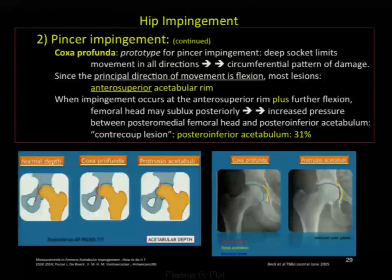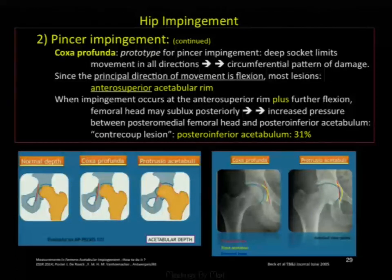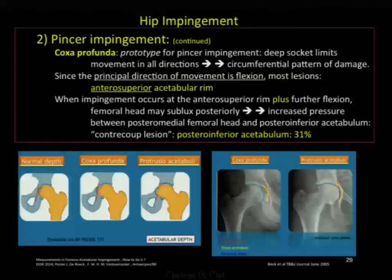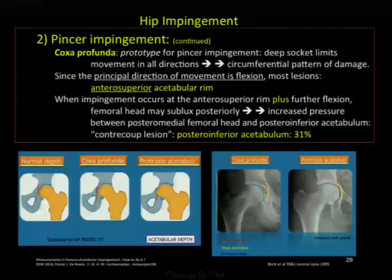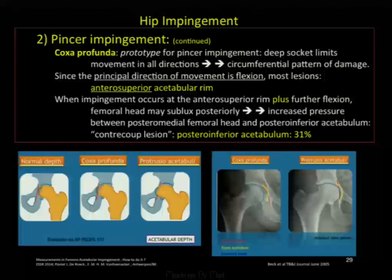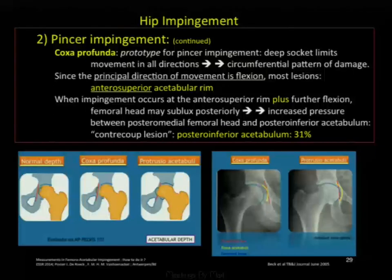In coxaprofunda, the prototype for over-coverage with a deep socket, movement in all directions leads to a circumferential pattern of damage. Since the principal direction of movement is flexion, most lesions are anterosuperior. When impingement occurs anterosuperiorly with further flexion, the femoral head may sublux posteriorly—a contra-coup lesion that can occur in up to 31% of patients with pincer impingement.